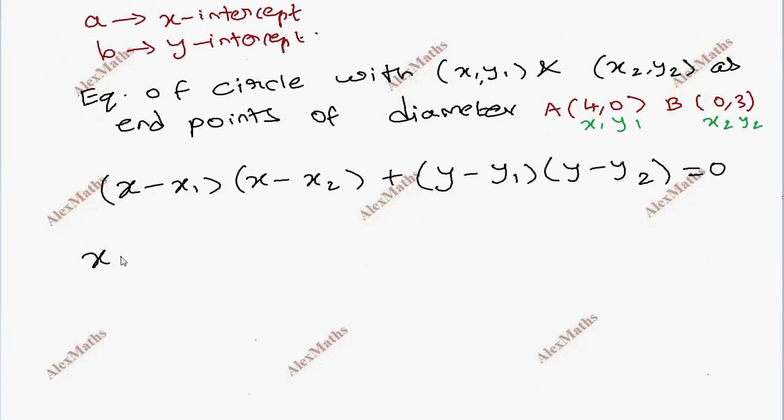x-4, x-0 plus y-0 into y-3 equal to 0. This is x2. So, x1. Suppose x1 is y2.